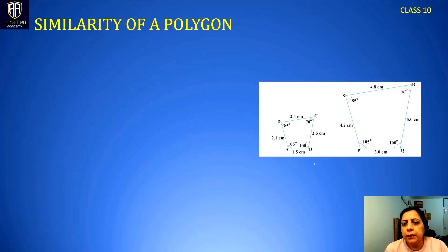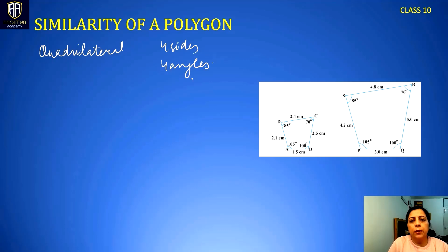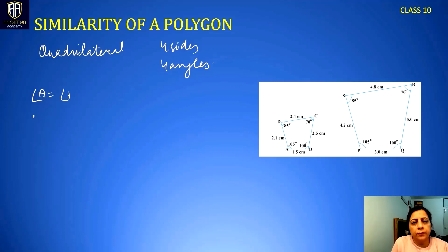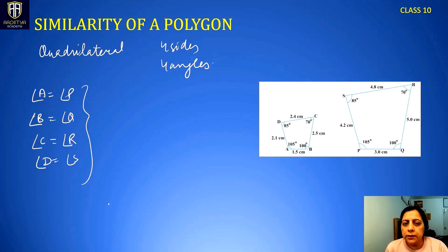Here comes a practice example. This is quadrilateral ABCD — a polygon with four sides and four angles. For two polygons to be similar, their angles should be the same. In ABCD, angle A is 105, and angle P in PQRS is also 105. Angle B is 100 and angle Q is also 100. Angle C is 70, equal to angle R in PQRS. Angle D equals angle S. So the basic requirement for two polygons to be similar has been met.